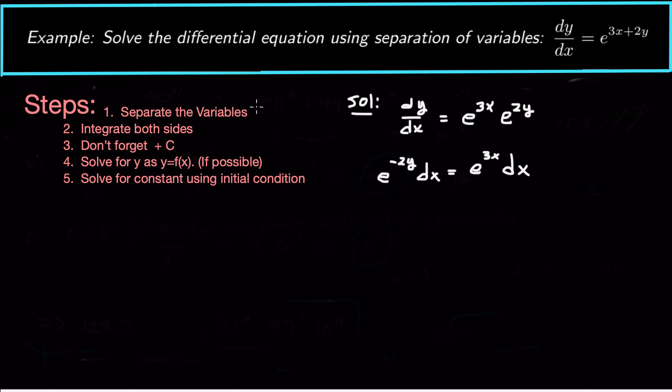Alright, so I separated the variables completely. On the left we have only y, that should be a dy. On the right we only have x. So now we're good to integrate. So integrate on both sides and on the left we get negative one half e to the negative 2y. On the right we get one third e to the 3x plus C. So put plus C right there.